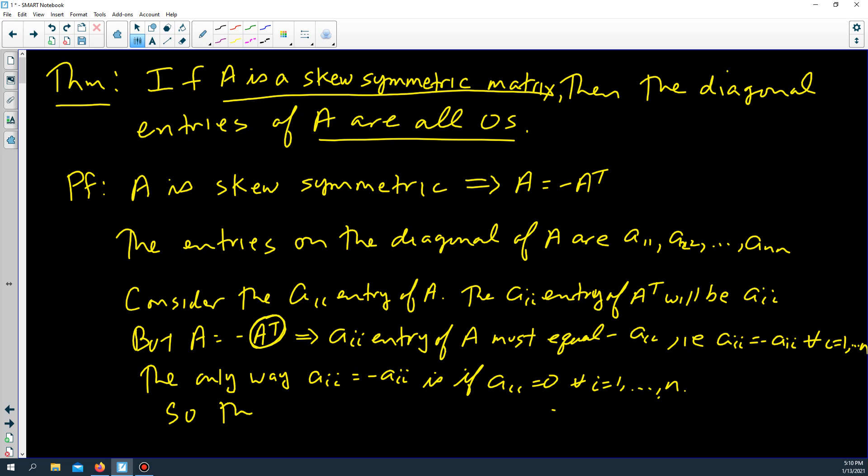So the diagonal entries of A are all zero. And that completes this proof.